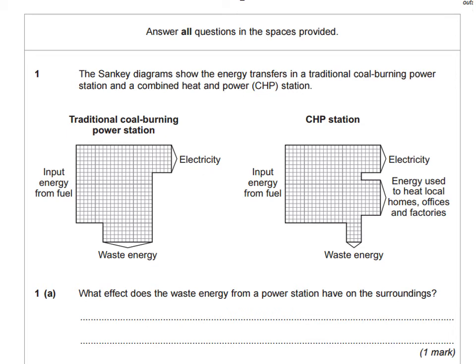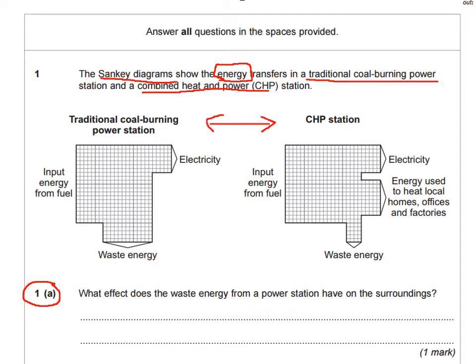So we come to our first question. This one was unusual — the majority of students got question 1a wrong. It says the Sankey diagrams show the energy transfers in a traditional coal burning power station and a combined heat and power station. The key word across all these questions is energy. They've given us a diagram that compares the two, and that diagram will be very useful for the majority of sub-questions.